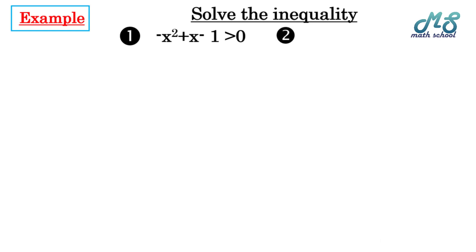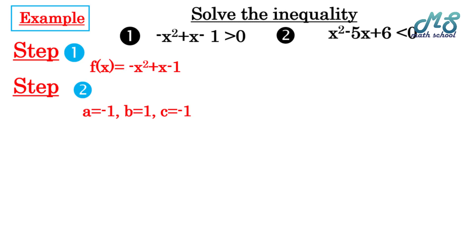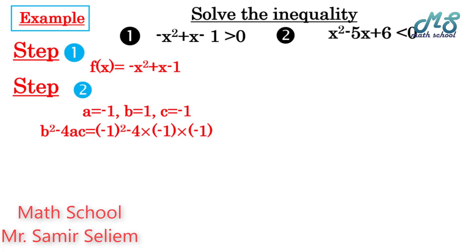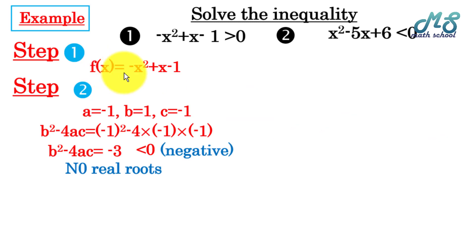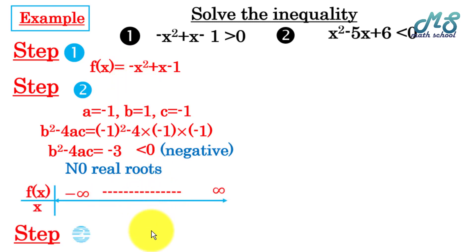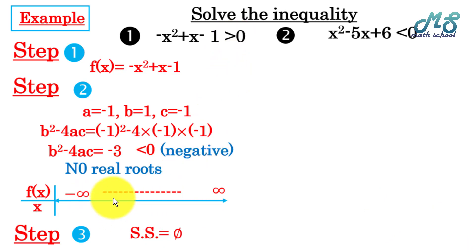Another example — solve: (1) -x² + x - 1 > 0. Step 1: related function f(x) = -x² + x - 1. Step 2: find the sign. a = -1, b = 1, c = -1. Discriminant = 1² - 4(-1)(-1) = -3, which is negative — no real roots. The sign of the function is the same as the sign of a, which is negative. Since the inequality requires positive values and the function is always negative, the solution set is the empty set ∅.